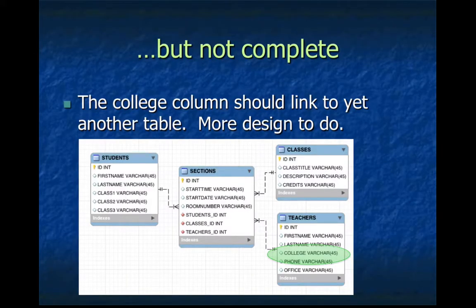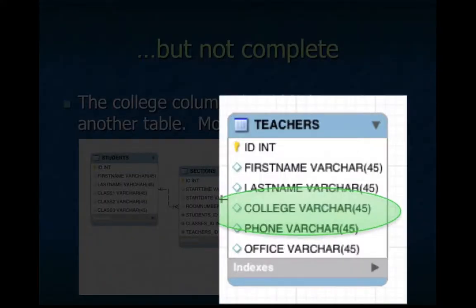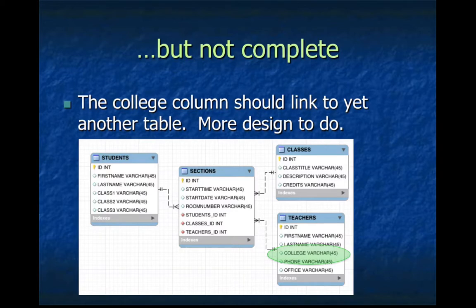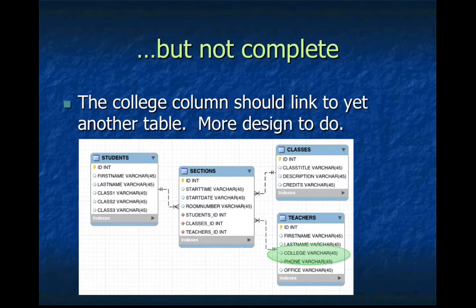It's not complete even yet. Look at the teachers table — the teacher works in a certain college. At a university, there might be a college of science, arts, business, and education. So if your teacher is in the college of education, we should have an ID number for that college with details about the department head and building location. So we're going to add yet another table. The scheduling system is going to grow to 10 or 20 tables depending on how many details we have to keep track of.